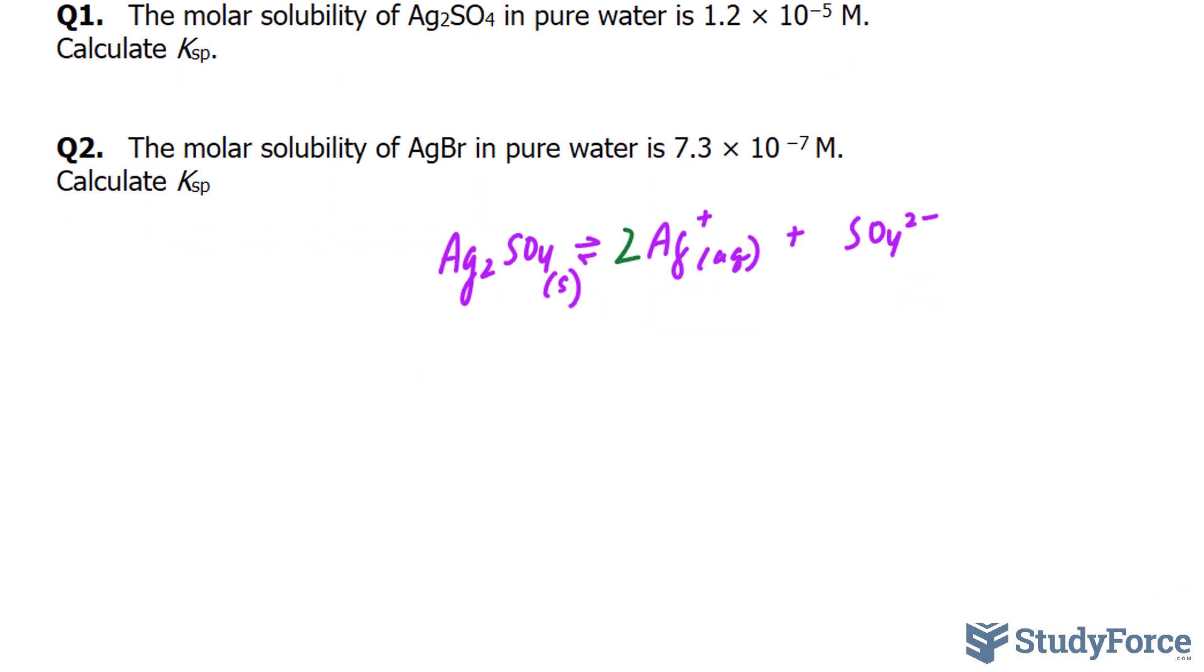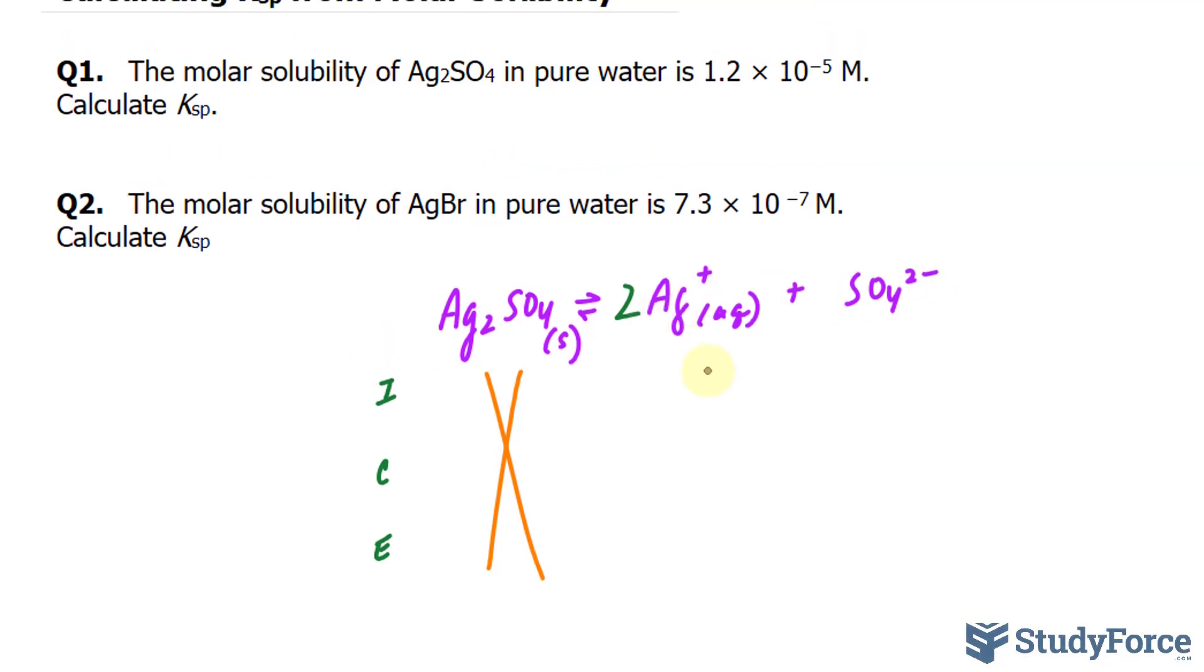Now we'll create an ICE table showing the initial, change, and equilibrium concentrations. Since this is a solid, that does not count in our equilibrium expression, so I'll just cross that out and we'll focus on these two. The initial concentration of Ag+ is obviously 0 at the beginning, and there's none of this either.